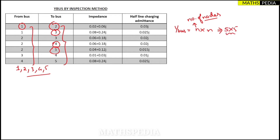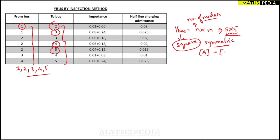Therefore the order of the Y-bus matrix will be 5×5. Always remember the properties of Y-bus: it is a square matrix as well as a symmetric matrix. Square means the number of rows and columns are the same. Symmetric means the matrix A equals its transpose A-transpose.